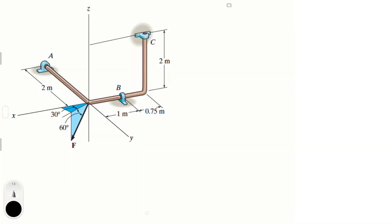This problem states that a rod is supported at A, B, and C by smooth journal bearings. We need to determine the components of reaction at the bearings if the rod is subjected to a force of 800 newtons. The bearings are in proper alignment and exert only force reactions on the rod. For the free body diagram, the bearings have reactions: B has a BZ and BY reaction but no BX reaction, since that's perpendicular to the bearing.